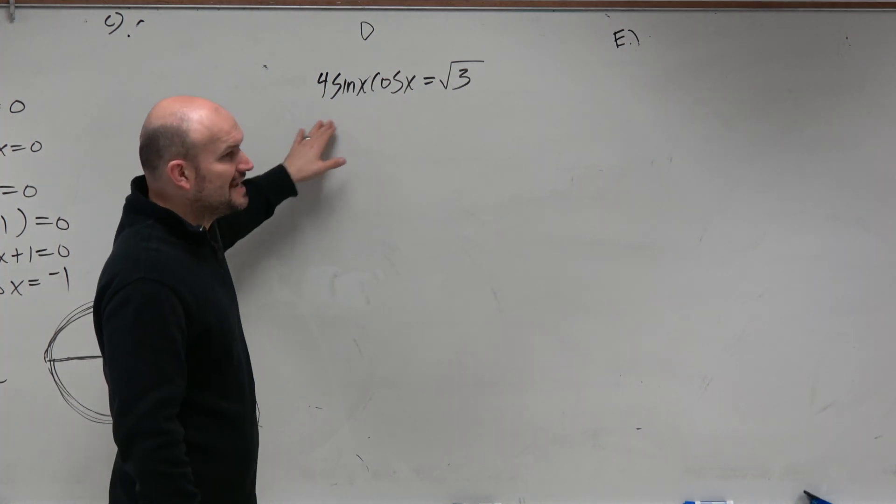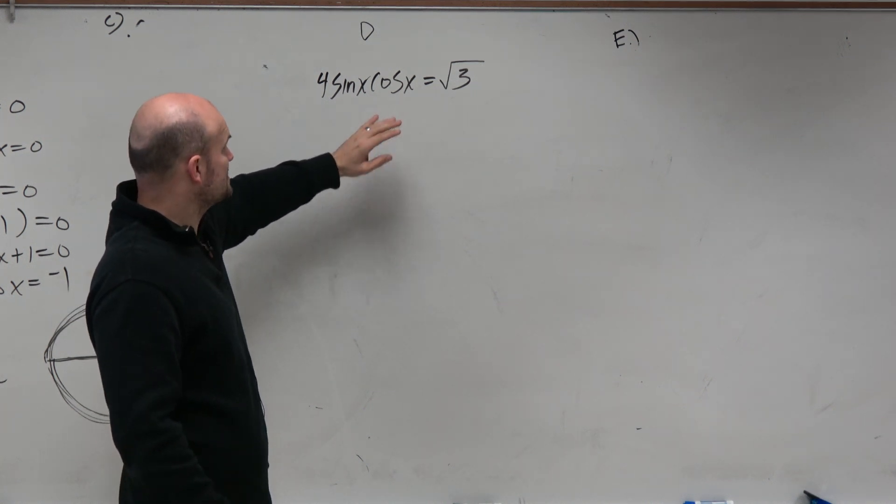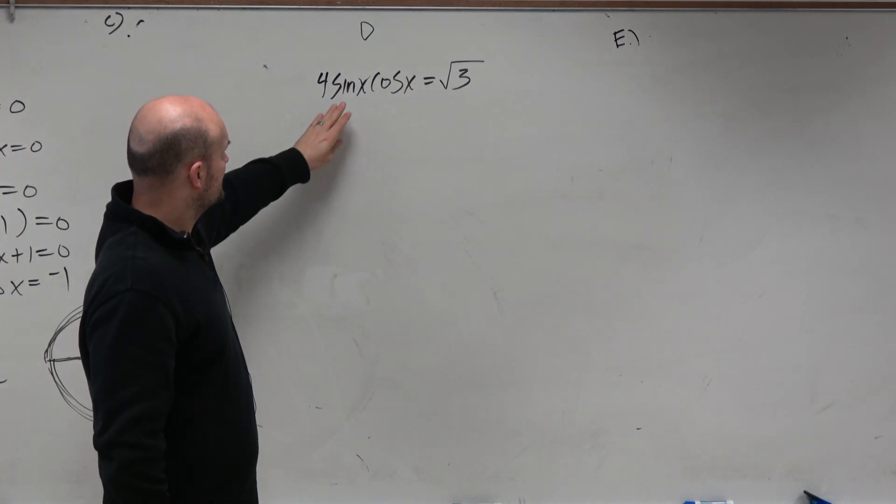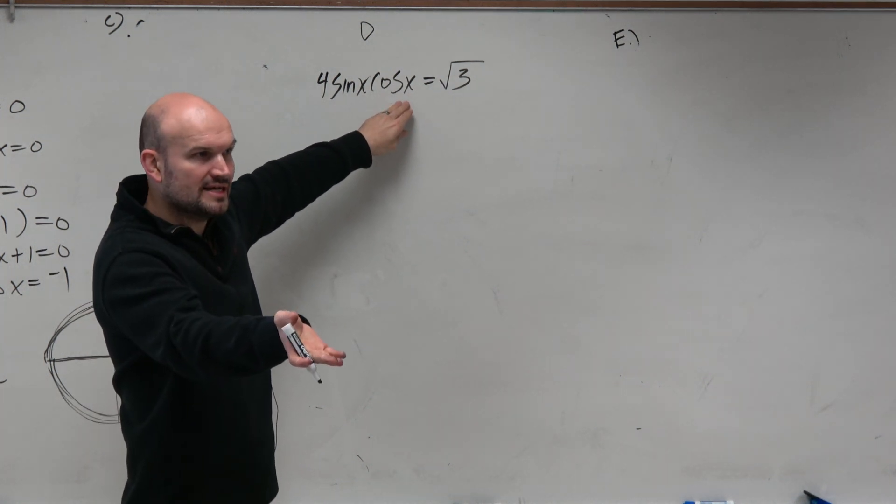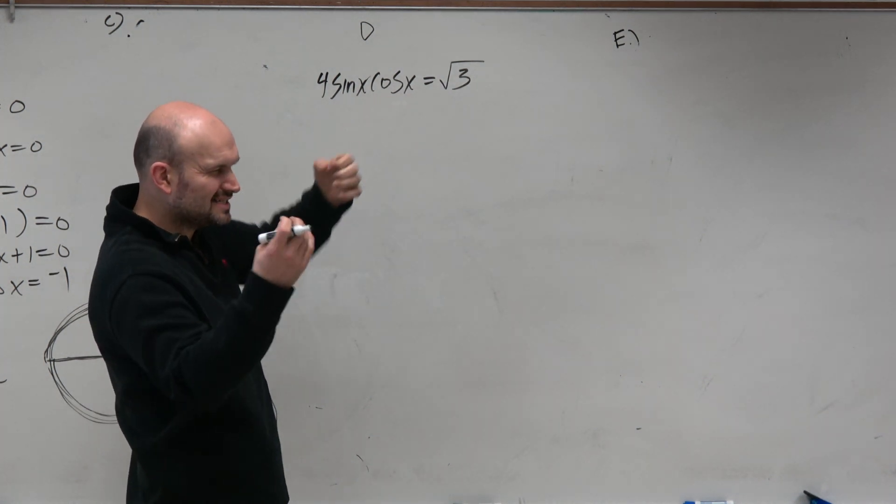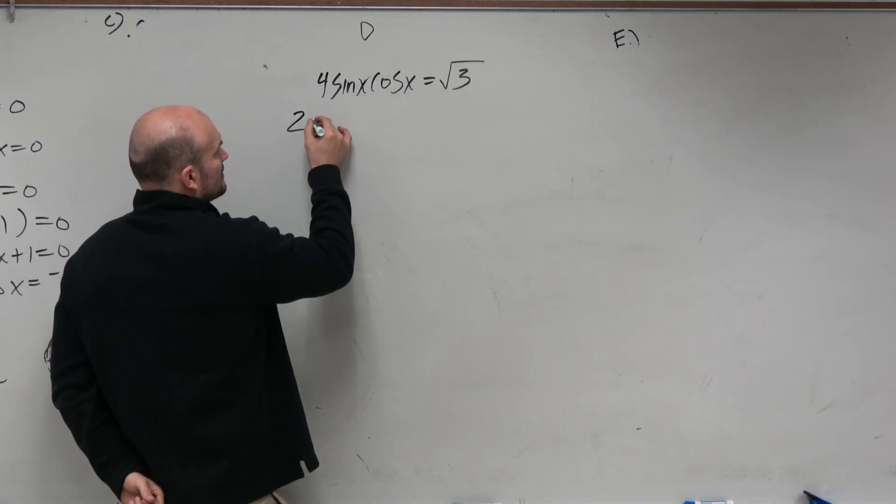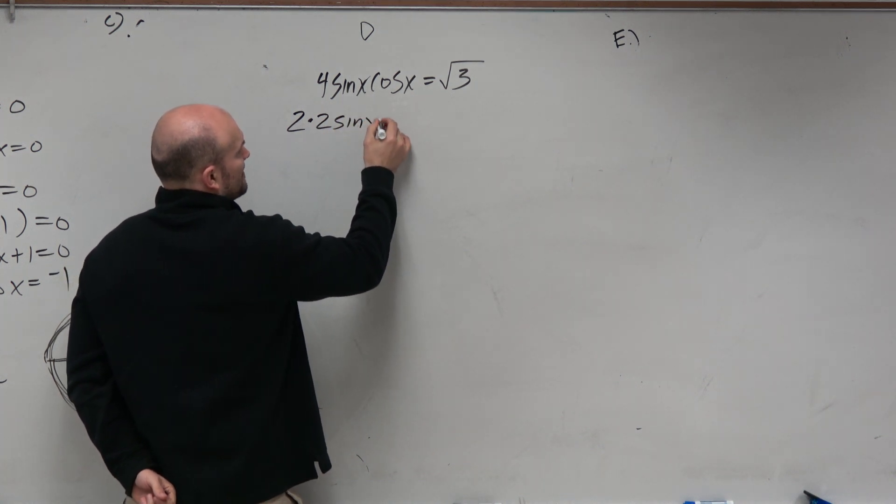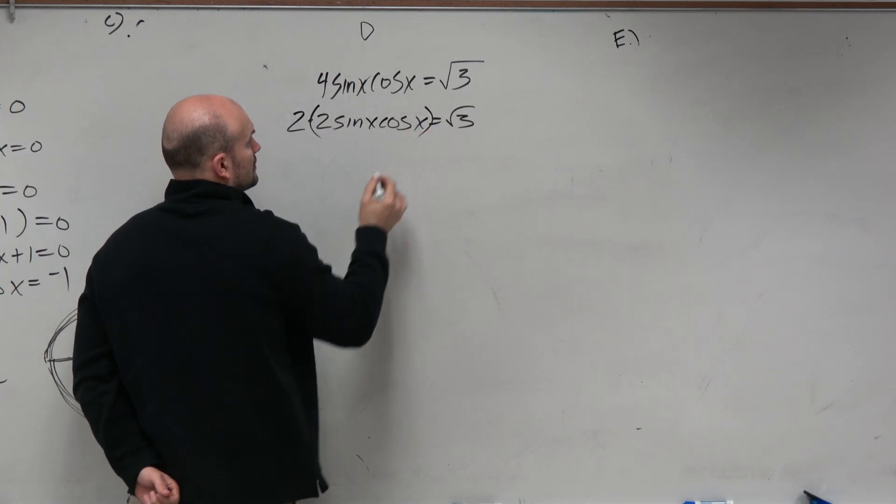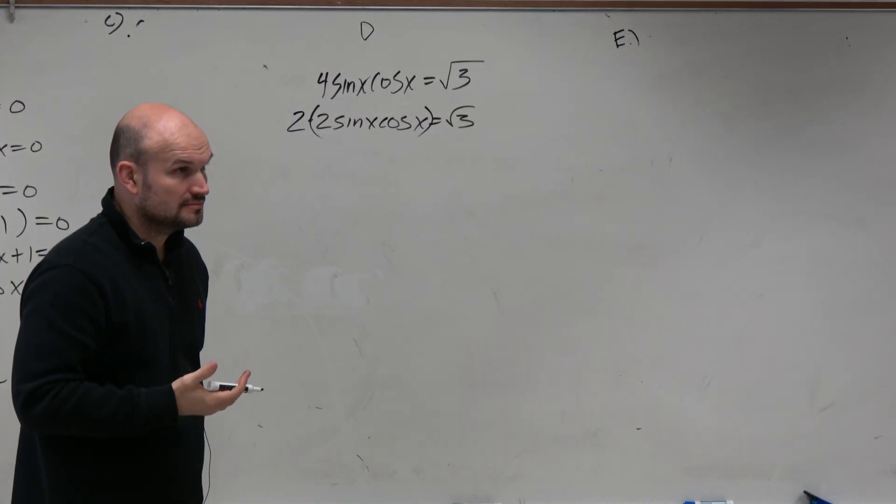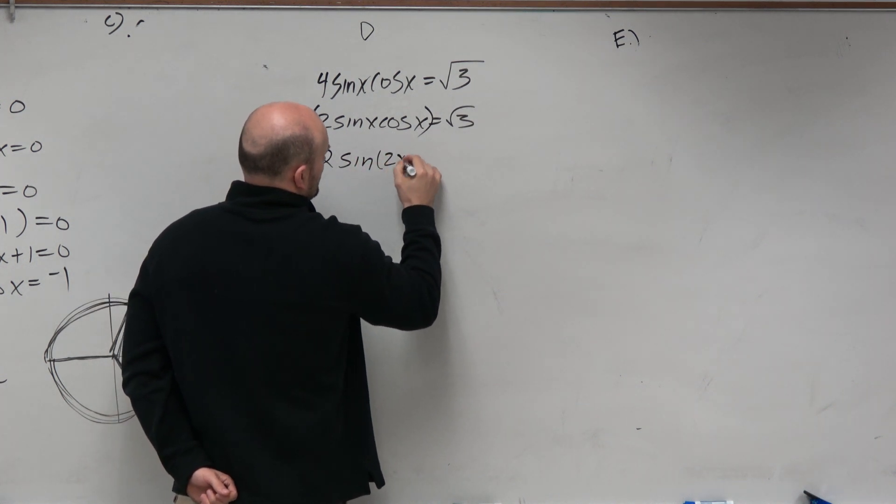We don't have any identities or anything else that we could do initially for this, but we recognize sine times cosine is part of that double angle identity. But we need to get it to be a 2, not a 4. So I could say, well, why don't I write this as 2 sine of x cosine of x. That's still the same thing, but now this is equal to sine of 2x.